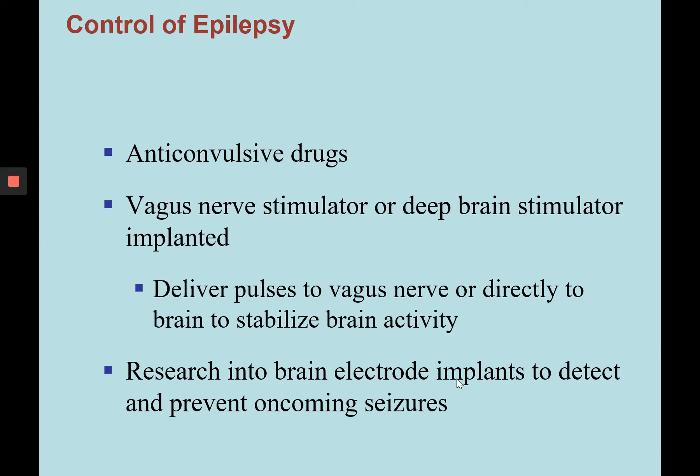Control of epilepsy is usually by anticonvulsive drugs, the use of a vagus nerve stimulator, or a deep brain stimulator. A vagus nerve stimulator is planted around the shoulder with electrodes connected to the vagus nerve, and when a button is pressed or at regular intervals, pulses are delivered to the vagus nerve directly to the brain to stabilize brain activity. There is also research into a brain electrode that can be placed directly into the brain to prevent oncoming seizures.